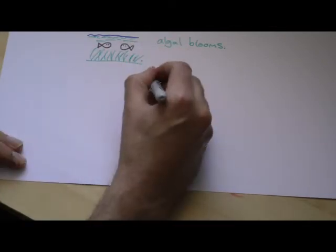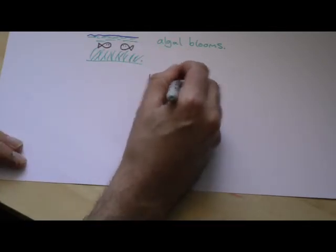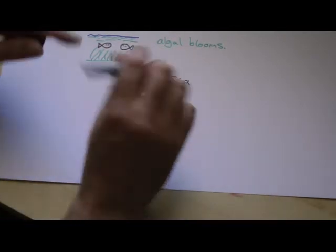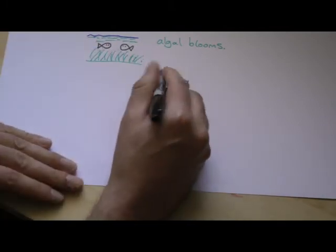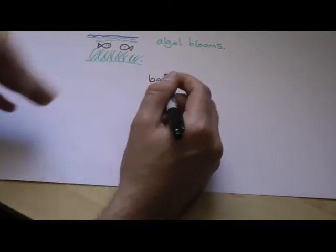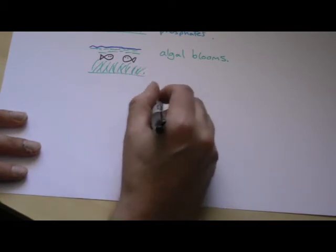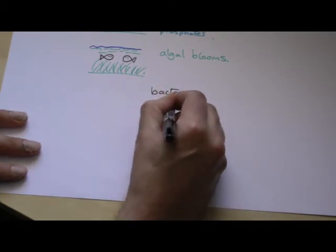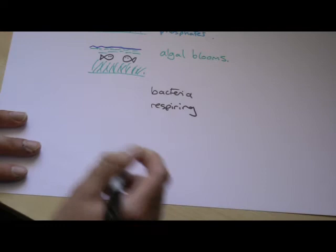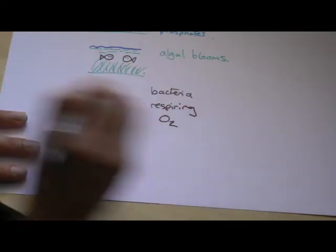Because the rotting is done by bacteria. And the bacteria, of course, when we talk about rotting things, it's really just bacteria feeding - that's what they feed on, this rotten material. And the bacteria will be respiring, and the respiration requires oxygen.